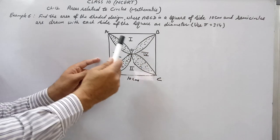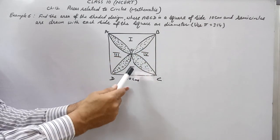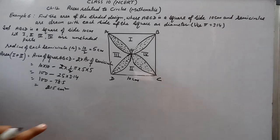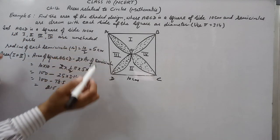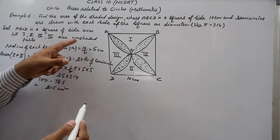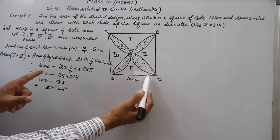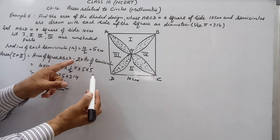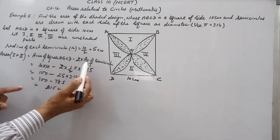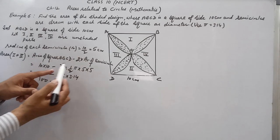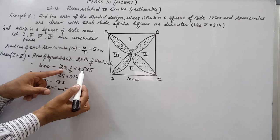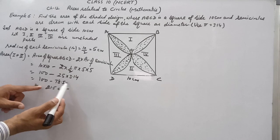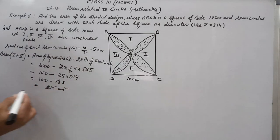Subtracting the two semicircles from the square gives us unshaded parts 1 plus 2. Similarly we can find area 3 plus 4. Area 1 + 2 = area of square ABCD minus 2 × area of semicircle = 10×10 − 2×(½πr²). With r = 5, the 2s cancel: 100 − 25π = 100 − 25×3.14 = 100 − 78.5 = 21.5 cm².